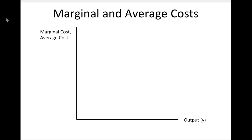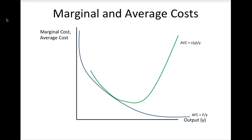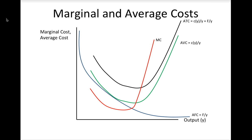We can now put all of the cost curves into a single diagram. Average fixed costs will be continually declining. Average variable costs might initially decline or be constant, but eventually will rise, giving a U-shape. Average total costs will also be U-shaped and located above average variable costs. Marginal costs will be below both average variable and average total costs while they are falling, will intersect these cost curves at their minimum values, and will be above these cost curves when they are rising.